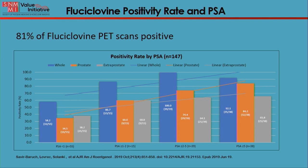Another important fact is that fluciclovin PET-CT should be considered before treatment for recurrent disease because it helps with accurate treatment planning, and that has also been proved. Looking at this graph — at our institution, we had a peer-reviewed publication looking at the population of patients who had that scan. We found that 81% of this population had positive scans. I divided it into different PSA levels: below one, one to two, two to five, and above five. You can see there is a linear relationship between positive findings overall — in the prostate and extra-prostate — as PSA increases.